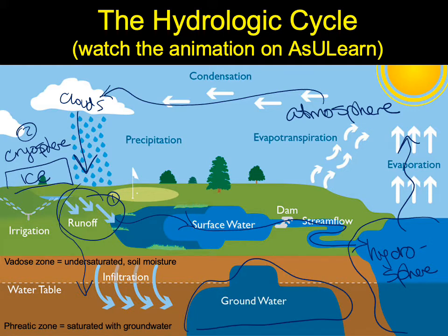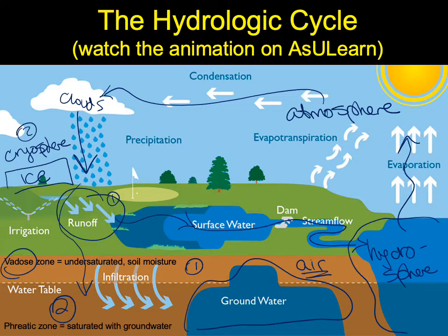Groundwater is a very large protected reserve of water on the planet. There are essentially two zones where water can go in the subsurface. The first is the vadose zone, where water is trapped between soil particles — essentially soil moisture — but it is under-saturated with respect to water, so there's still lots of air. The water is held as droplets or a thin film around individual soil particles. The second zone is the phreatic zone, the saturated zone, which is below the water table.